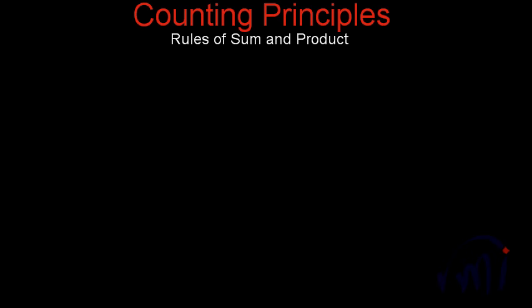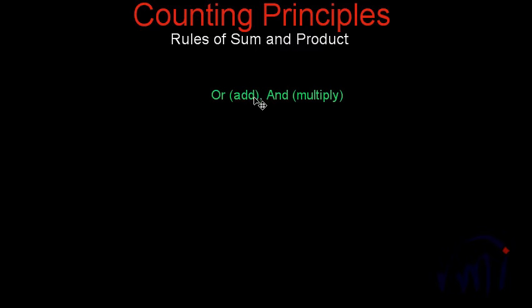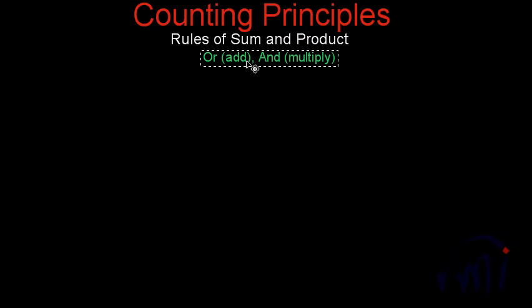And if you have two or more tasks which are to be performed one after another, and all of them are supposed to be performed, then you actually multiply the possibilities of the outcomes of each task. So this is the golden rule.